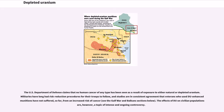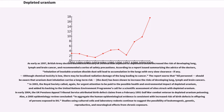The U.S. Department of Defense claims that no human cancer of any type has been seen as a result of exposure to either natural or depleted uranium. Militaries have long had risk reduction procedures for their troops, and studies are in consistent agreement that veterans who use DU-enhanced munitions have not suffered an increased risk of cancer. As early as 1997, British Army doctors warned the Ministry of Defense that exposure to depleted uranium increased the risk of developing lung, lymph, and brain cancer, and recommended a series of safety precautions.